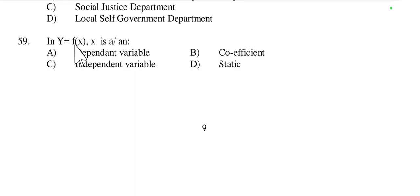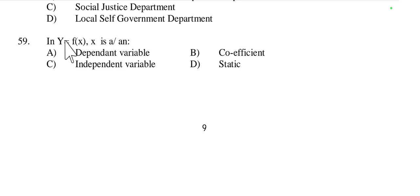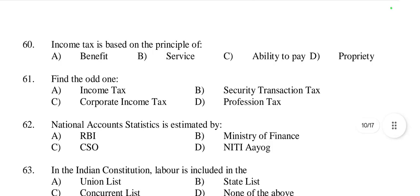Question 59: In the equation Y = f(X), X is described as what type of term? Here X is an independent variable and Y is a dependent variable, because Y's values depend on X — if we raise the value of X, the value of Y increases. So option C is right.